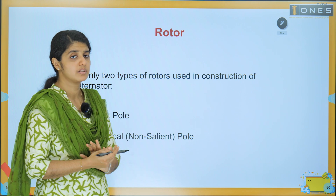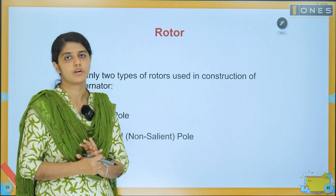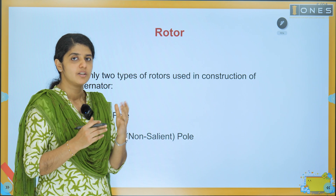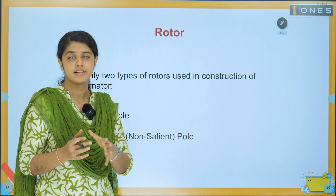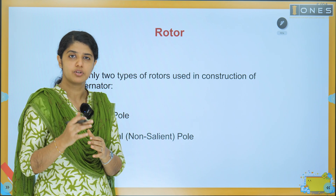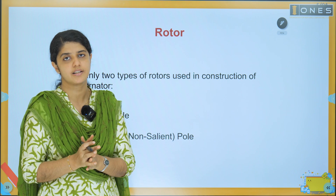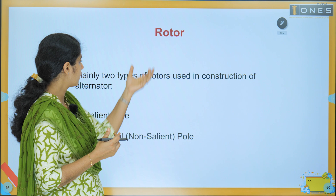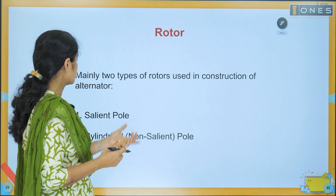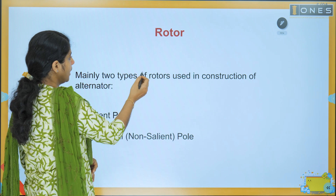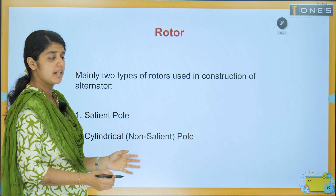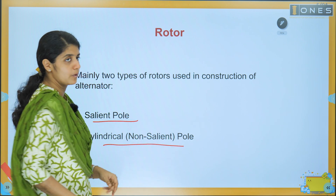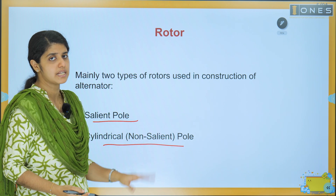In detail, the rotor is the rotating part. The rotating part is the field system — it has poles. In rotating field type, the field is part of the rotor. The two types of poles are salient poles and cylindrical poles. A cylindrical pole is a non-salient pole construction.